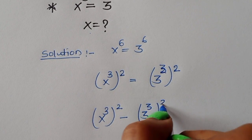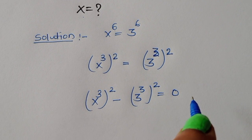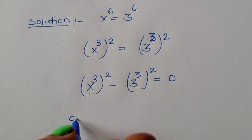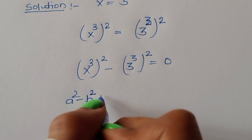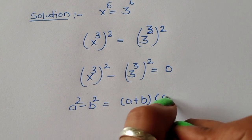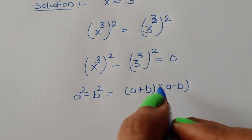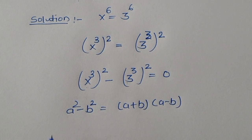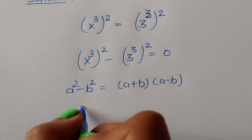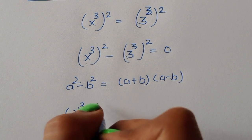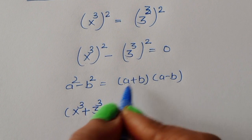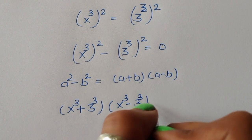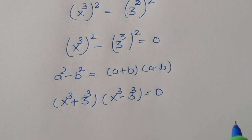This is the formula of a² - b², where a² - b² = (a + b)(a - b). Using this formula we write (x³ + 3³)(x³ - 3³) = 0.